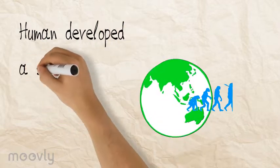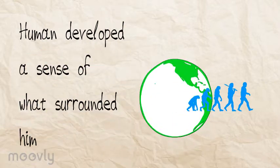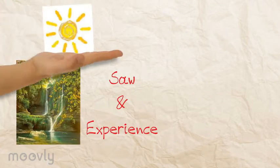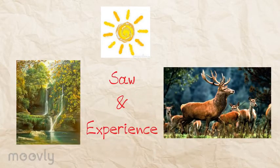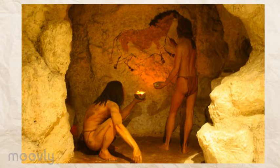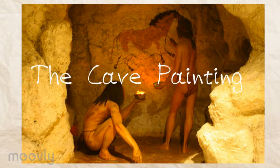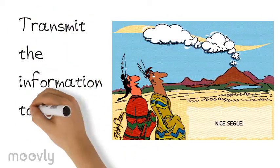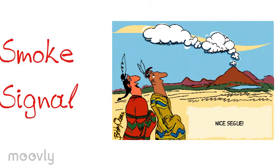Back in the day, man developed a sense of what surrounded him by trying to depict all that he saw and experienced, using mud and sharpened tools to draw and carve on walls — the cave painting communication. They also tried to transmit information to distant locations through smoke signals.